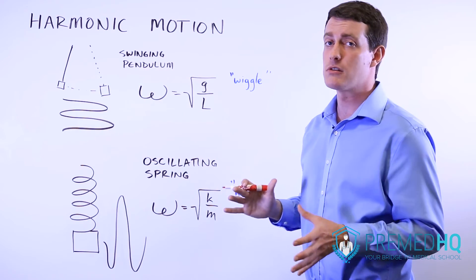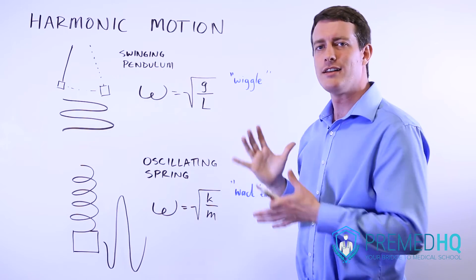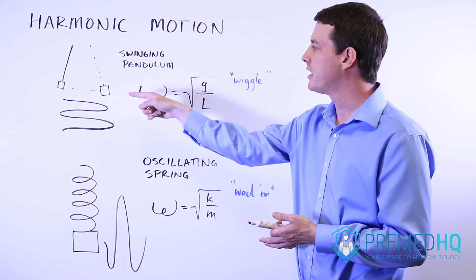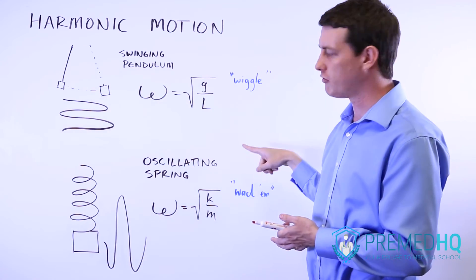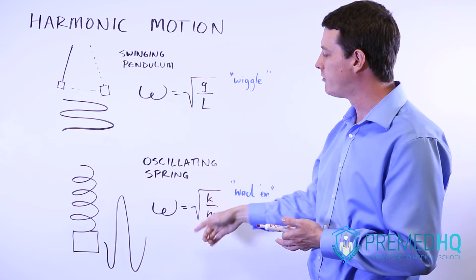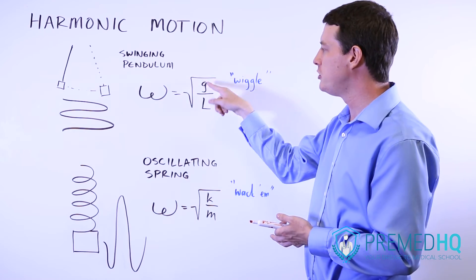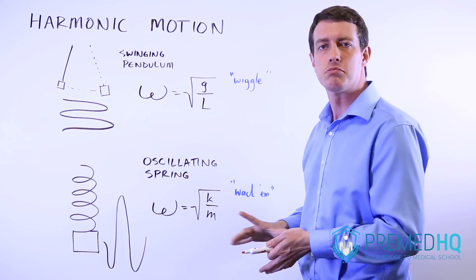Now, a good way for students to remember this is just realizing that this lowercase omega in your angular frequency looks a lot like a W. So you can remember the swinging pendulum as wiggle, W equals the square root of g over L. And you can remember the spring formula as Wacom, W equals the square root of k over m. So WGL for the pendulum, WKM for the spring.